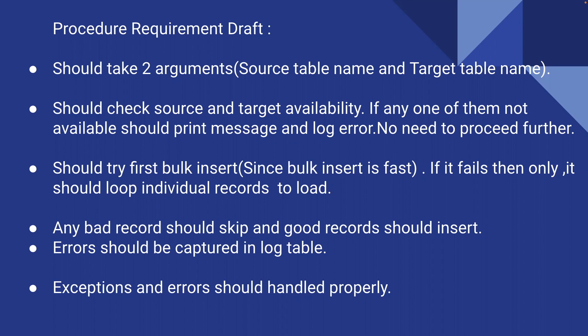The second requirement is it should check source and target table availability. It should check whether the stage table really exists and whether the target table exists in the main schema. If the source is not there, it should log the error in the log table and let us know that the given source table is not available in the database. The same should happen for the target table.